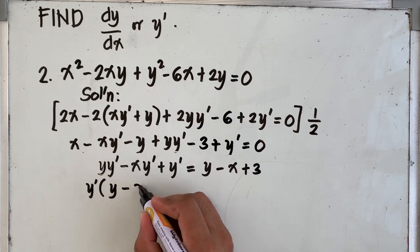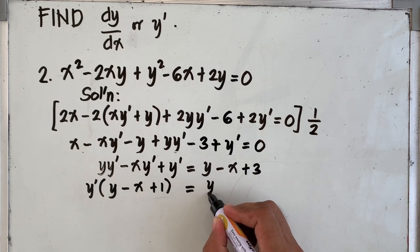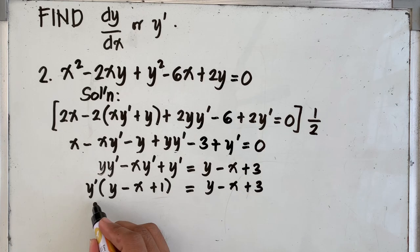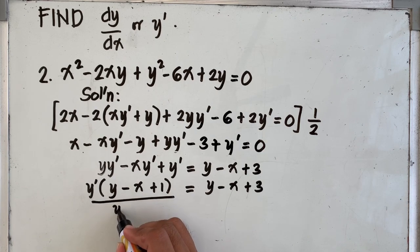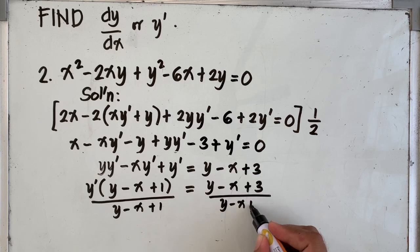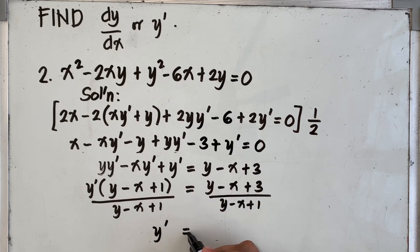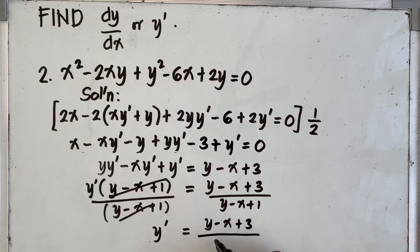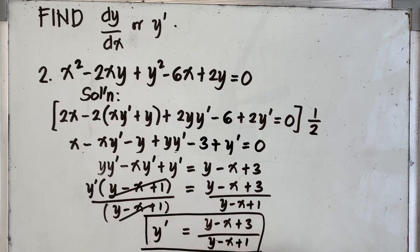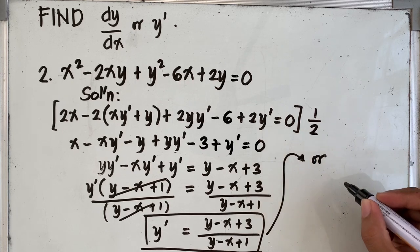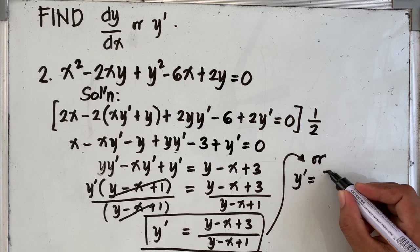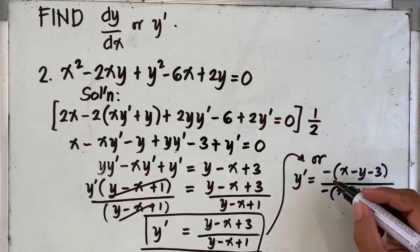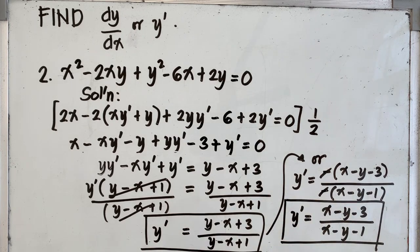We factor out y prime at the left side of the equation, giving y prime times the quantity y minus x plus 1 equal to y minus x plus 3. Dividing both sides by y minus x plus 1, we now have y prime equal to y minus x plus 3 over y minus x plus 1. This is our final answer. Alternatively, we can rewrite it by factoring out the negative sign.